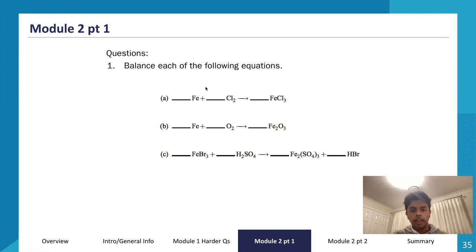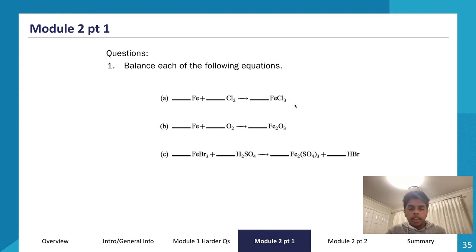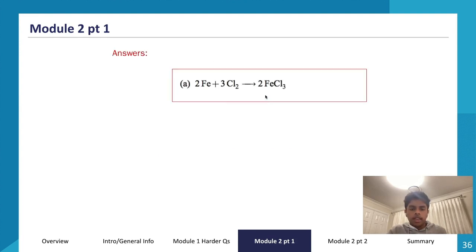Let's balance part a: Fe + Cl2 → FeCl3. Chlorine has 2 on the left and 3 on the right, so the common multiple is 6. I'll put a 2 in front of FeCl3 to get 6 chlorines on the right, then a 3 in front of Cl2 to get 6 chlorines on the left. To match, I put a 2 in front of Fe as well. The balanced equation is: 2Fe + 3Cl2 → 2FeCl3, giving 2 irons and 6 chlorines on both sides.